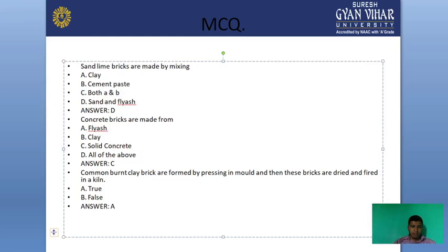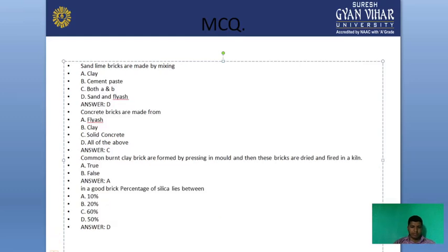Next question: common burnt clay bricks are formed by pressing in a mold and then bricks are dried and fired in a kiln — true or false? The process of pressing a brick in a mold, drying it, and heating it in a kiln is the correct process, so the answer is true. Next question: in a good brick, the percentage of silica lies between — options are 10%, 20%, 60%, and 50%. The correct answer is 50%, as a good quality brick contains 50% silica.